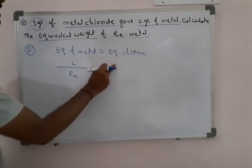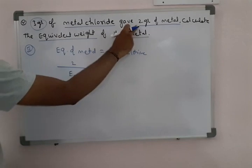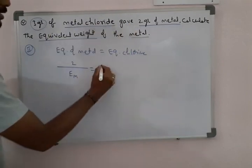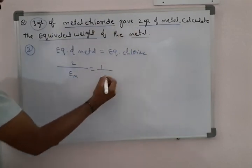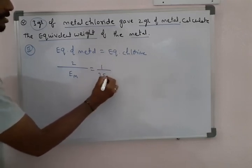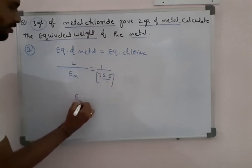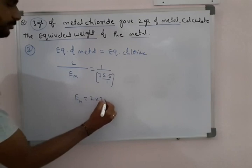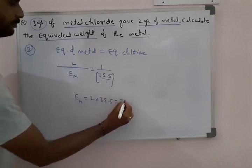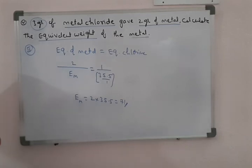Equivalence of chlorine means its weight. The chlorine weight is 3 grams minus 2 grams equals 1 gram, divided by the equivalent weight of chlorine which is 35.5. Therefore the equivalent weight of metal equals exactly 71. This is the equivalent weight of the metal in that metal chloride.